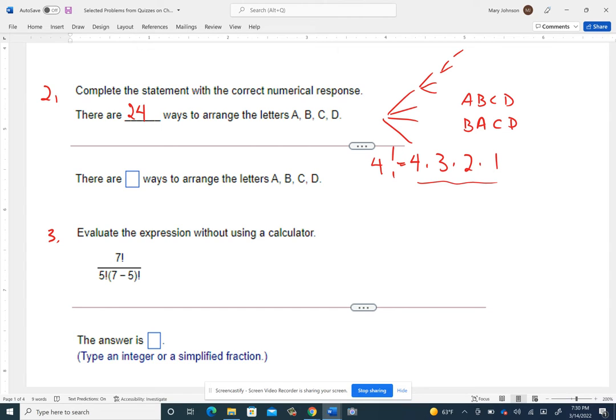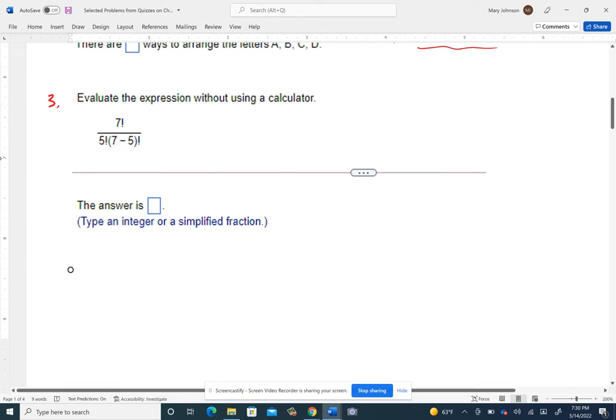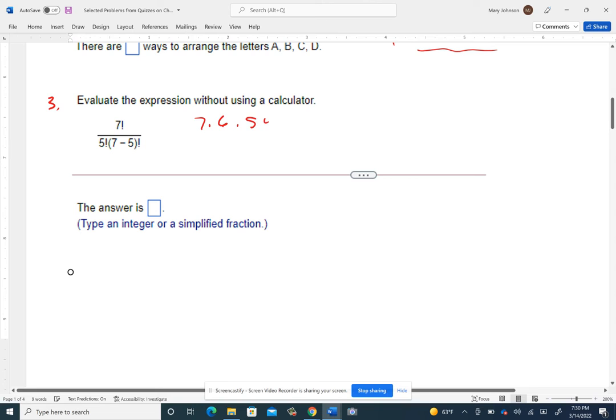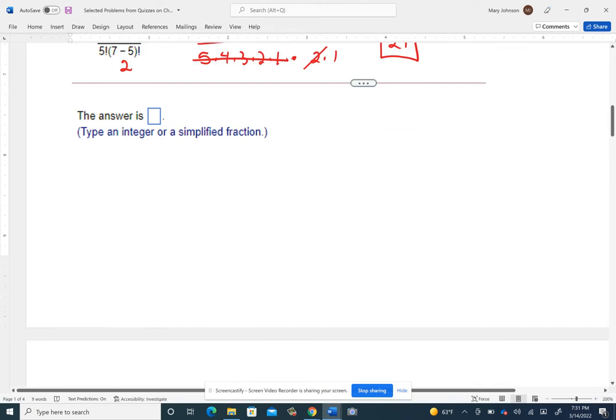The third question is just using your, by hand, figuring out what the value of this expression would be. So seven factorial would be seven, six, five, four, three, two, one, all multiplied together. In the denominator, we have five factorial, which would be five, four, three, two, one. And then this is two factorial. So that's times two times one. So the five to one would knock out the five to one there. And two could go into six three times and we'd wind up with 21 as the answer to that.